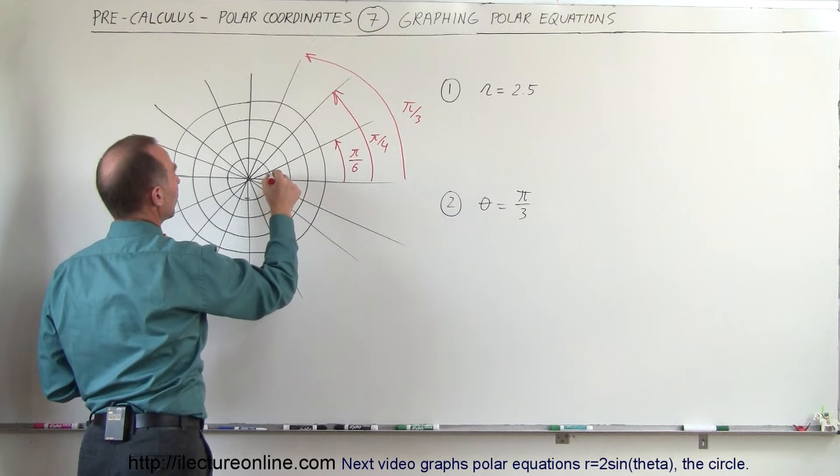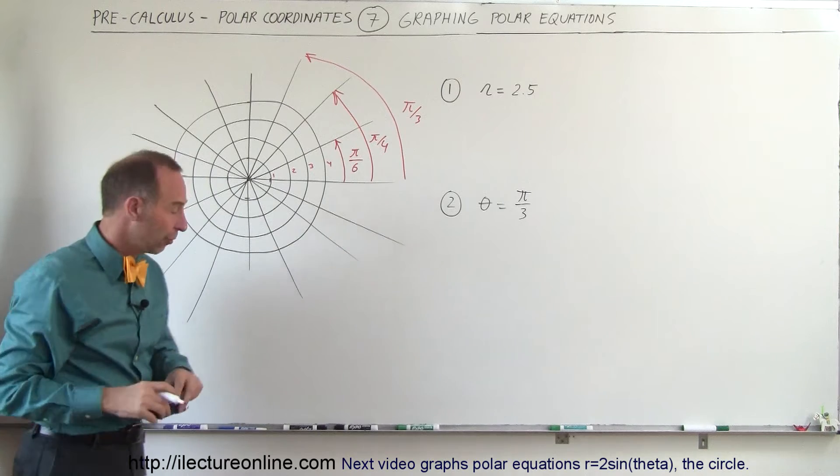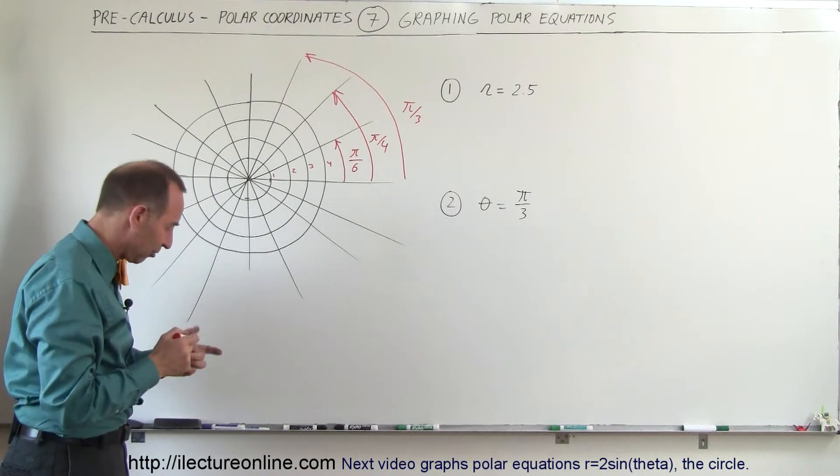So we have radii: this would be 1, 2, 3, 4, and that would then be the angle. So the first equation that we have is a very straightforward one.